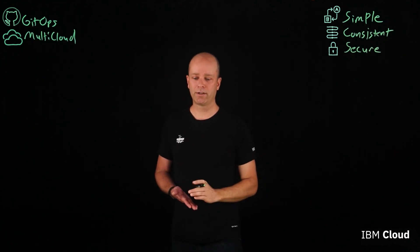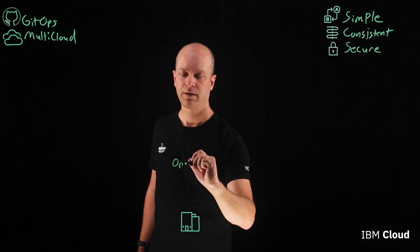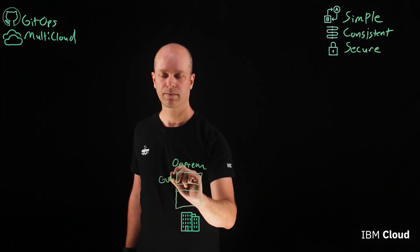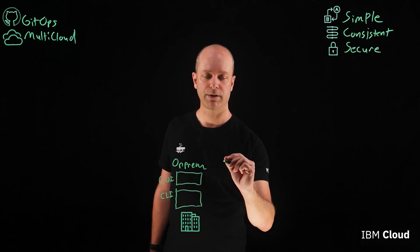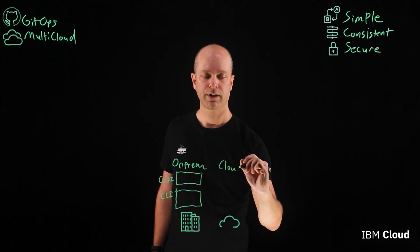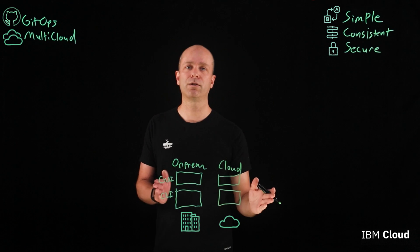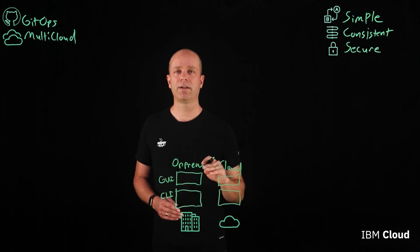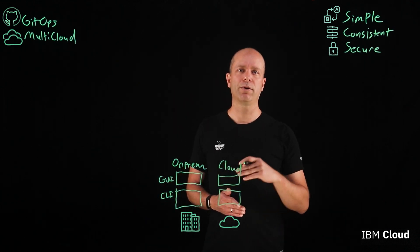Typically when customers are building applications, they start out with an on-prem environment, and they have a GUI and a CLI for managing that environment. But then they want to move to the cloud and utilize cloud environments, so they start using a cloud and it has its own GUI and its own CLI. Things get a little bit more complicated, and now they have hybrid cloud apps stretching across on-prem and cloud, and these different environments can be difficult to manage.